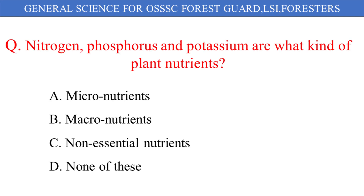Nitrogen, phosphorus and potassium are what kind of plant nutrients? The given options are: A. Micronutrients, B. Macronutrients, C. Non-essential nutrients, D. None of these. And the correct answer is option B: Macronutrients.